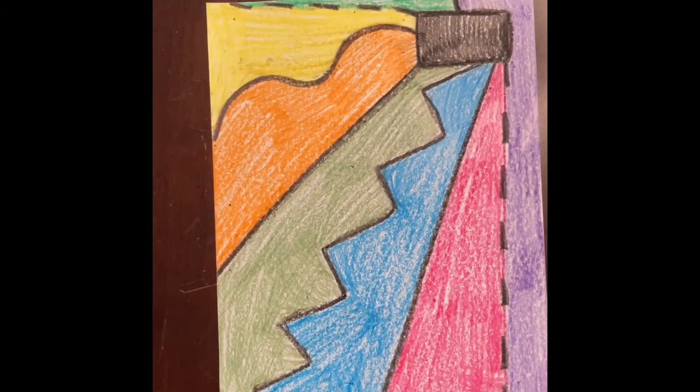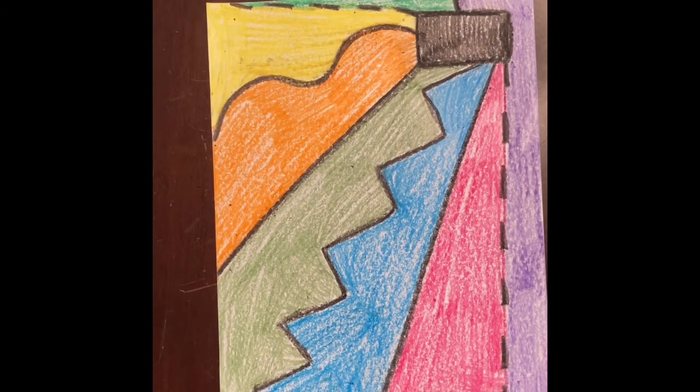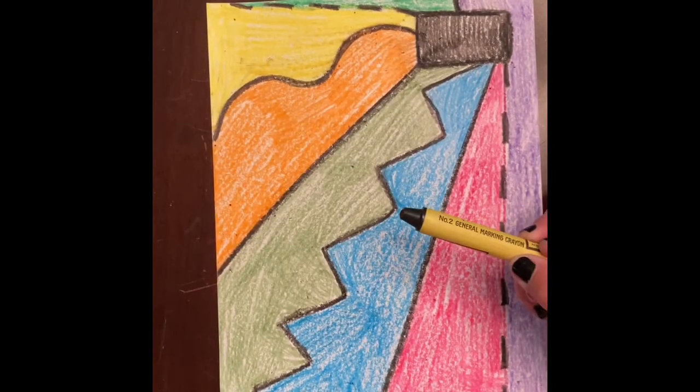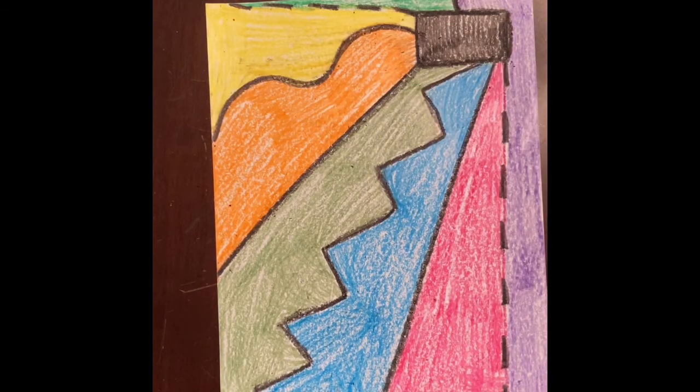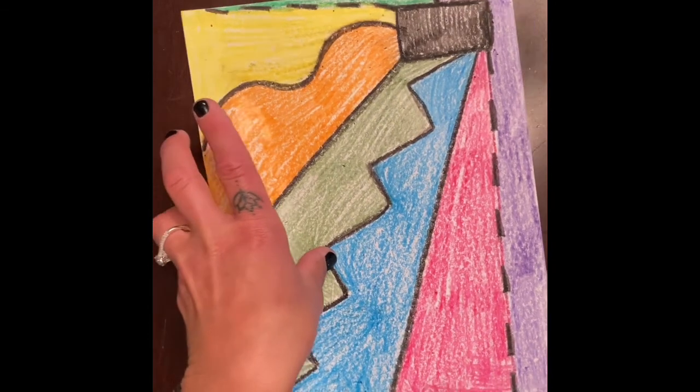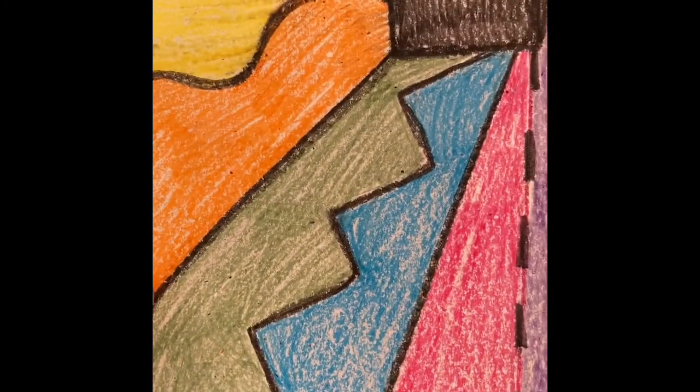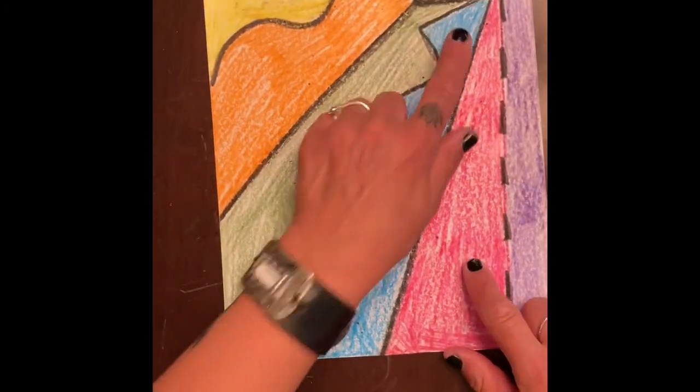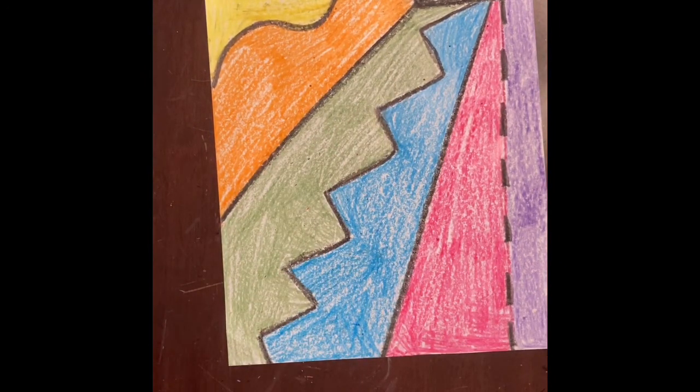Now once we're all colored, we have our moving line design. In the last step, I just took a crayon and outlined all those lines one more time so they really popped out. Now we have two really cool designs, and we learned about moving lines and how they're important in every artwork.